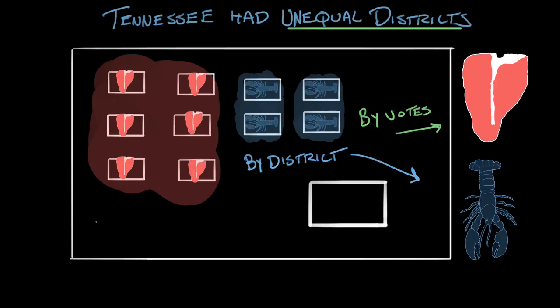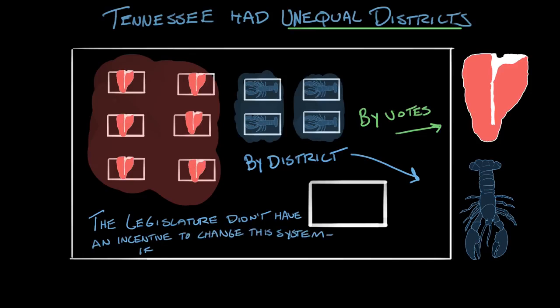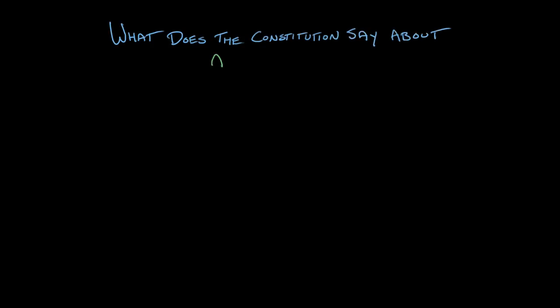When a student says there are many more people who prefer steak and it's a majority, the teacher might respond: I'm not going to change the system because the system reflects my preferences. It was the same thing in Tennessee — the state legislature did not have the incentive to change the system because if they did, they would lose their seats. So what does the Constitution say about apportioning representatives? Does it make any mention of how districts are supposed to be drawn?